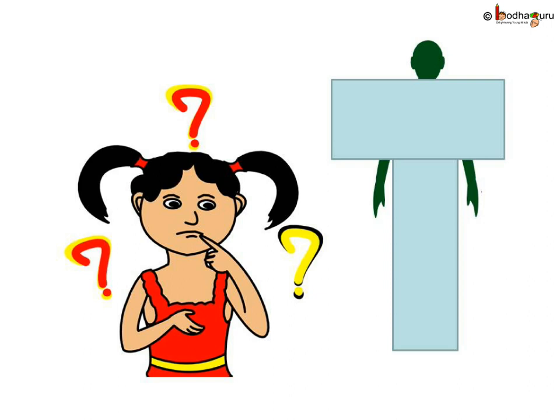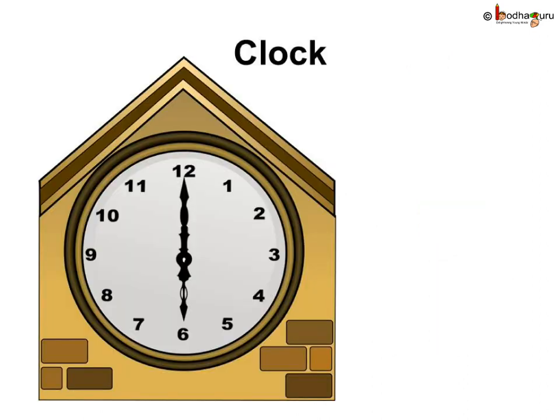Now let me tell you a riddle. What has two hands and a face but no arms and no legs? It is a clock! What is the use of a clock? It shows us time.